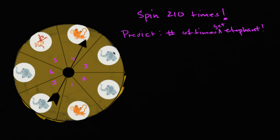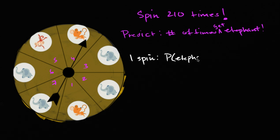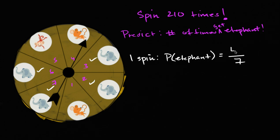One way to think about it is: for one spin, what is the probability of getting an elephant? Well, this is a fair spinner, there are seven equally likely possibilities. And how many involve getting an elephant? We have one, two, three, four — four out of the seven equally likely possibilities involve getting an elephant.